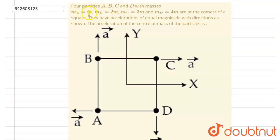Four particles A, B, C, D with masses m, 2m, 3m, and 4m are at the corners of a square. They have accelerations of equal magnitude with directions as shown. The acceleration of the center of mass of the particles is what?